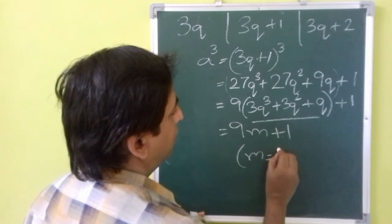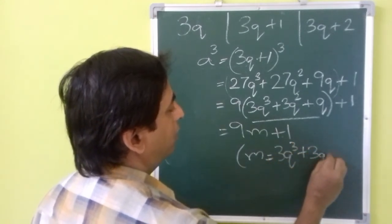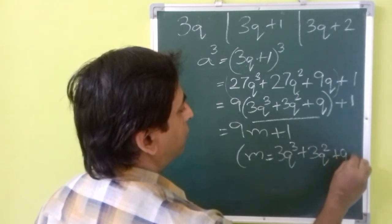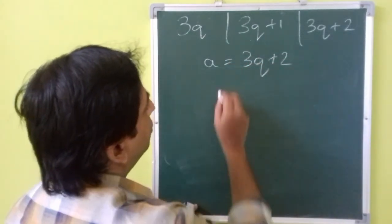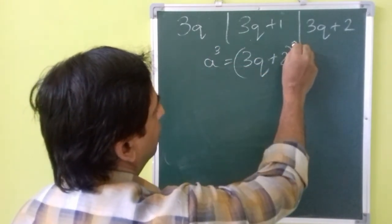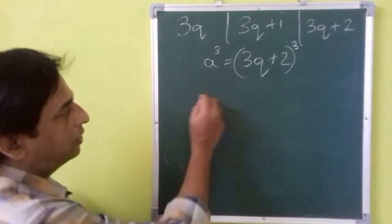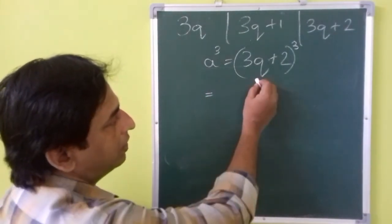Now 3q plus 2 to the power 3. So a cube will be 3q plus 2 to the power 3. We can again use the identity of a plus b to the power 3 to expand this.